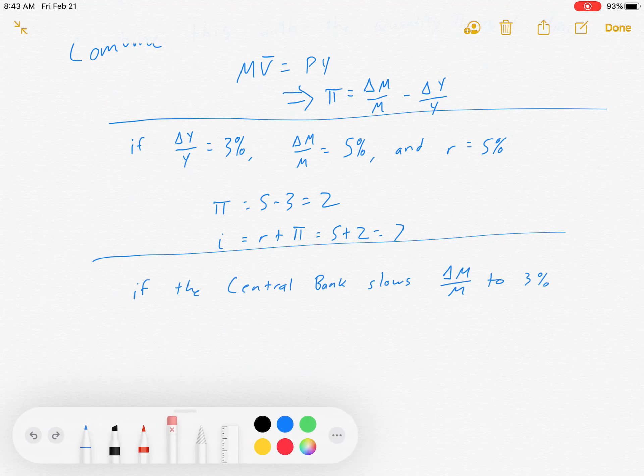Now let's make a quick change. What if the central bank slows the money supply growth to 3%?